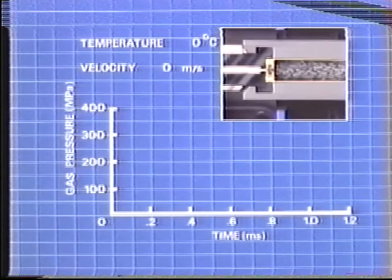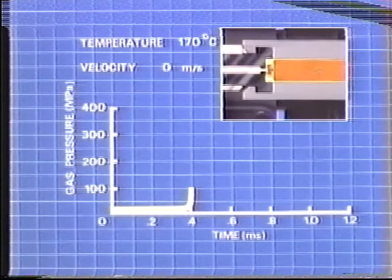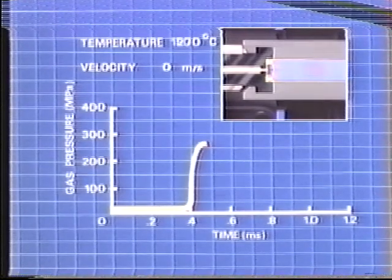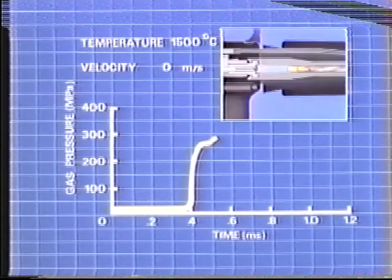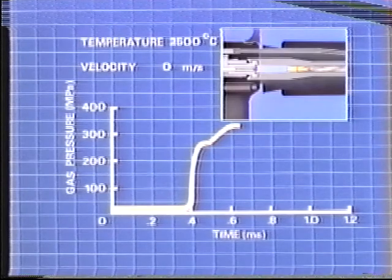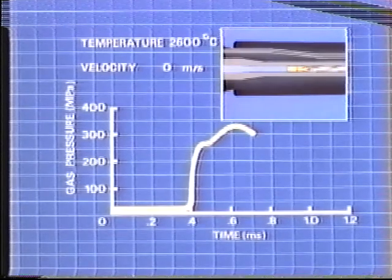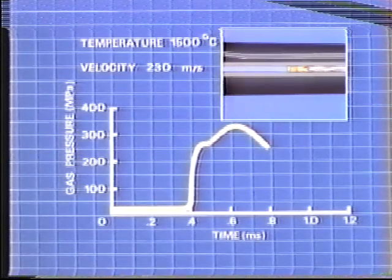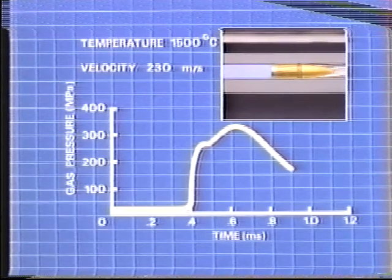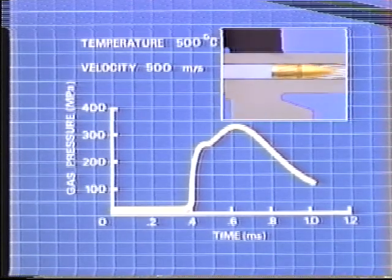The priming mixture ignites the propellant and the combustion produces heat and gas. The pressure levels off briefly while the cartridge case expands, providing rearward obturation. As the pressure builds to its peak, the bullet is dislodged. After the initial resistance to the rifling, the bullet rapidly increases in velocity and the gas pressure declines. The system is designed to deliver enough gas pressure back to the breech to operate the action.